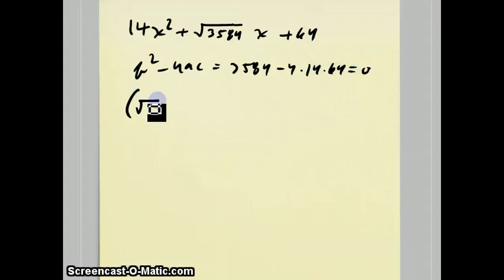This means it factors into a kind of ugly-looking squared: (√14x + 8)^2. Just keep that one in mind for later. Also note that this is approximately 59.9.